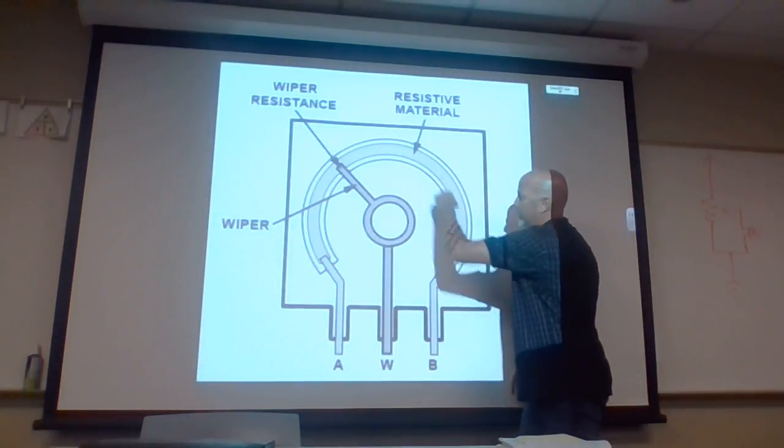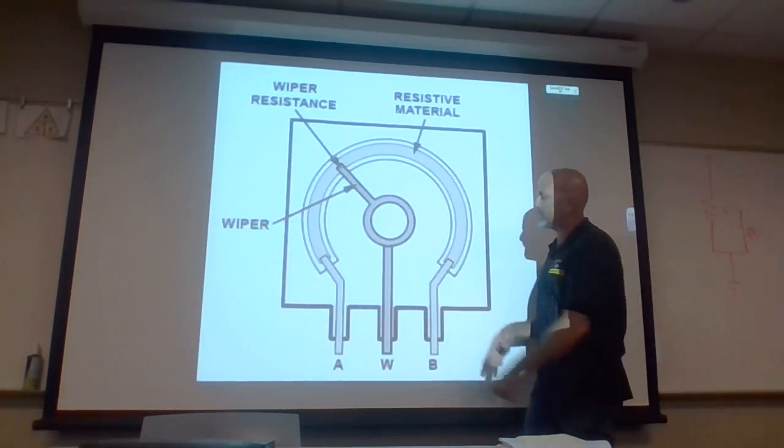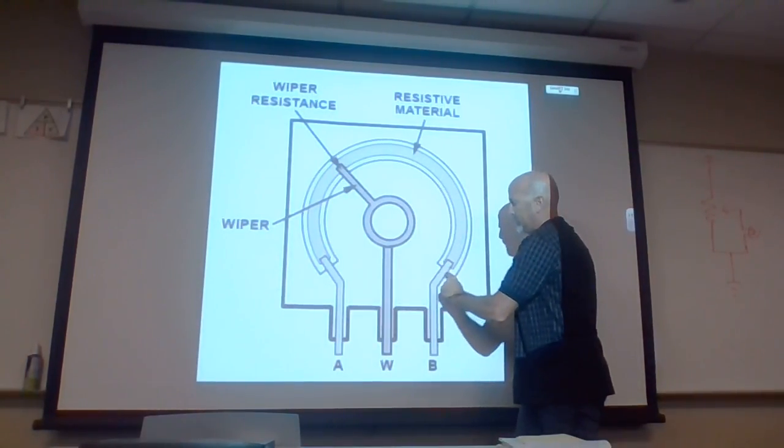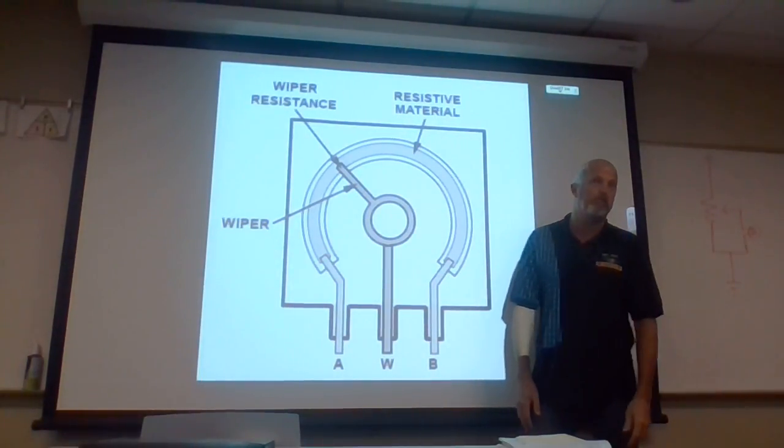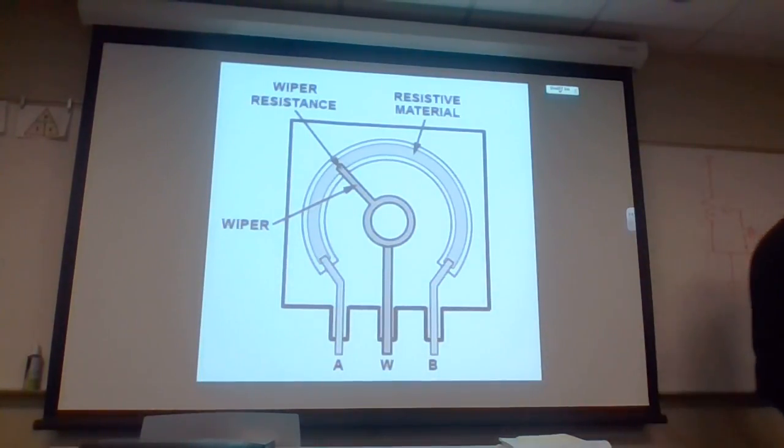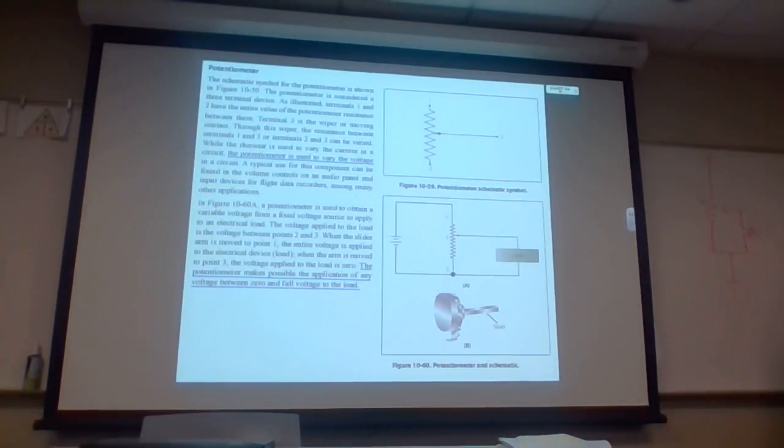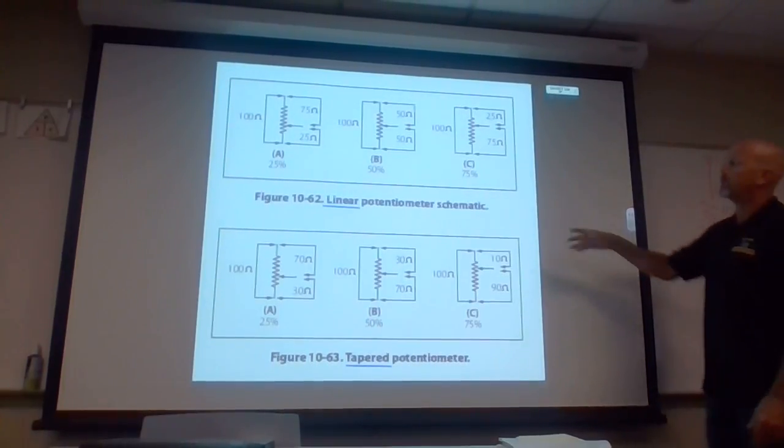So if I crank this all the way over here, and it's a 30 ohm rheostat, now it has to go all the way through to all the 30 ohms before it jumps, bridges across and goes out. There you go. Oh, okay. Makes sense. Yeah. Makes sense. Yeah. Pretty much. They actually call it a wiper. So you can have that and those, they can be linear or tapered. Linear like the one I just showed you.